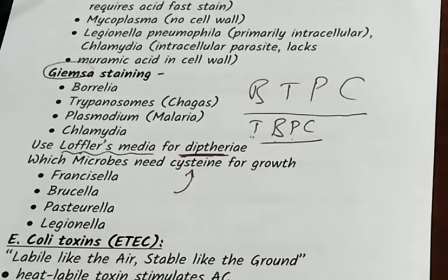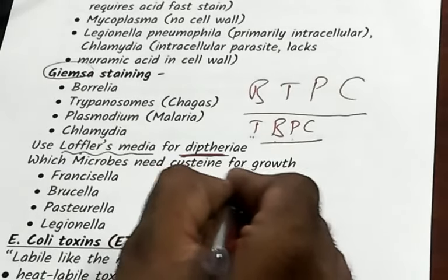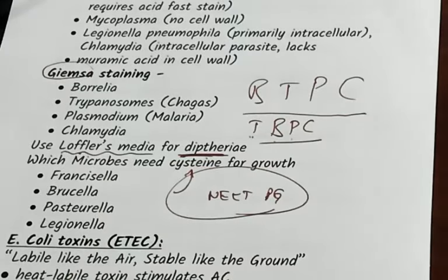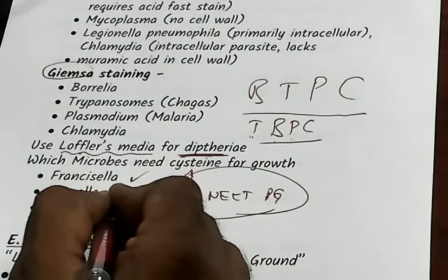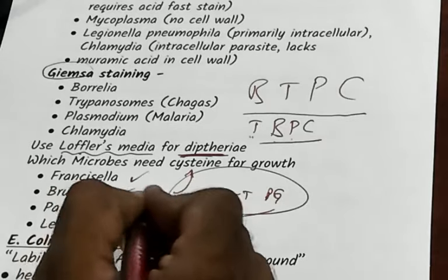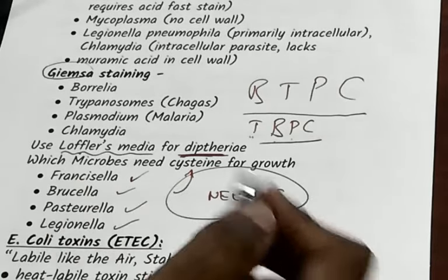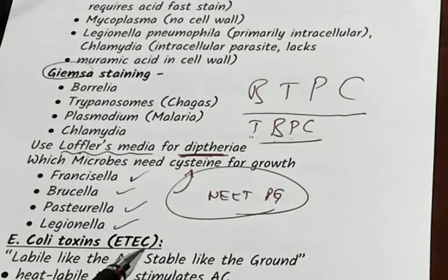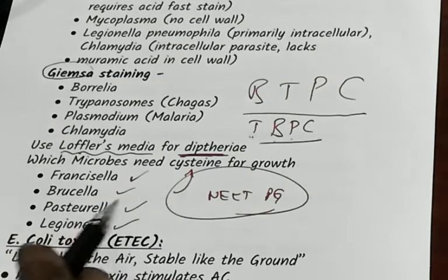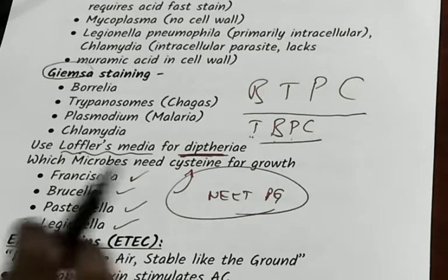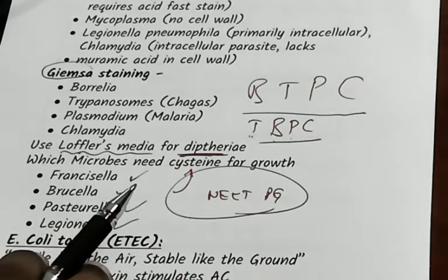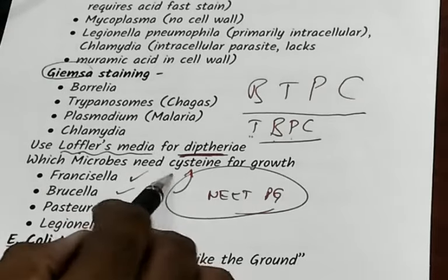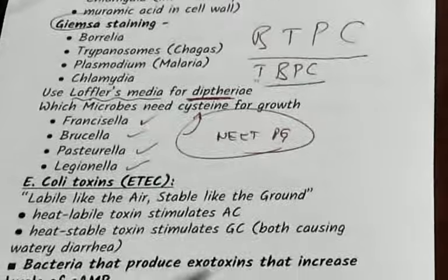A few microbes require cysteine for growth — one of the favorite NEET-PG MCQs. The mnemonic: Francisella, Brucella, Pasteurella, Legionella — 'Tuu Kaha Ho Mere Ella?' All the 'Ellas' are cysteine-requiring for growth. Remember: Francisella, Brucella, Pasteurella, Legionella — they require cysteine to grow.